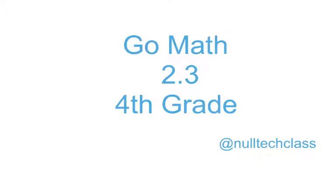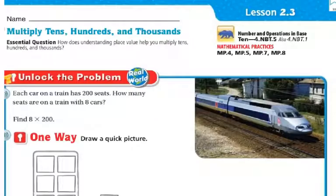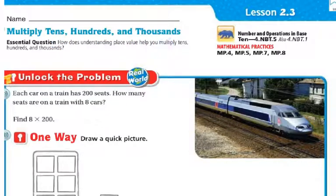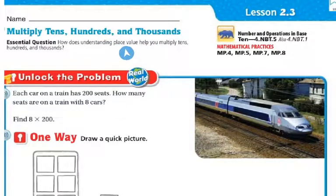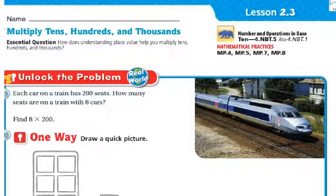Good morning, class. Today's lesson is 2.3. Today we're going to multiply tens, hundreds, and thousands. Our essential question: how does understanding place value help you to multiply tens, hundreds, and thousands?